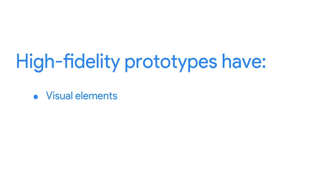A high-fidelity prototype must have these three pieces: visual elements like color, images, icons, and typography; navigation to help users move between screens; and interaction, like gestures and motion, which make the prototype function.